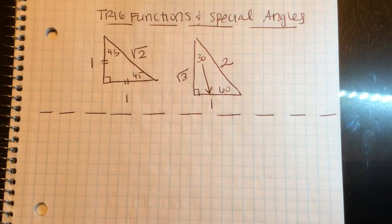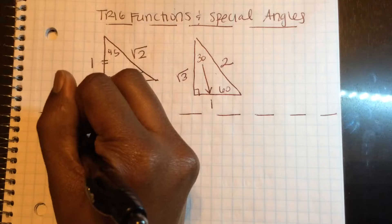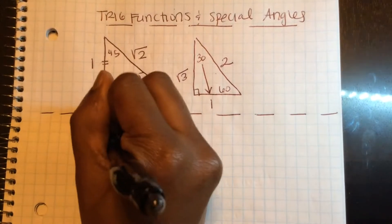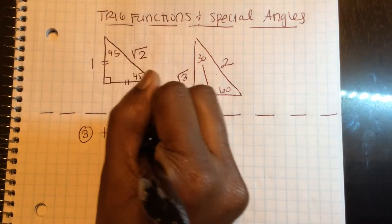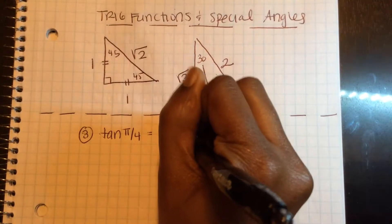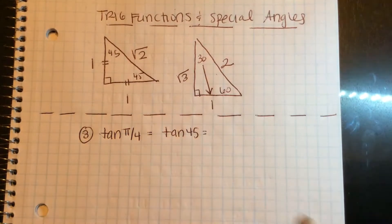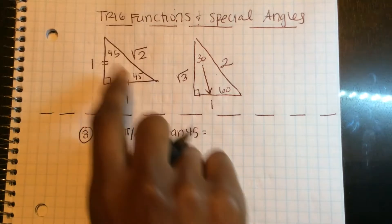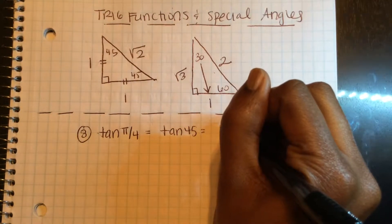In number 3, they're asking for tangent of π over 4. I know that π over 4 is 45 degrees. Using this triangle, opposite over adjacent, tangent of 45 is 1.